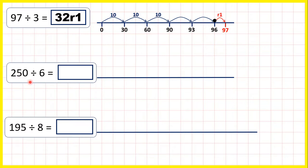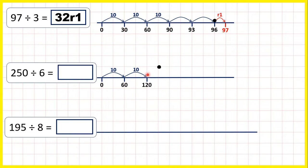Now 250 divided by 6. Again, we can count in steps of 10 times 6, so in steps of 60. 10 times 6 is 60. If we add another 10 lots of 6, so another 60, that takes us to 120. Then another 10 sixes takes us to 180, and then another 10 takes us to 240.